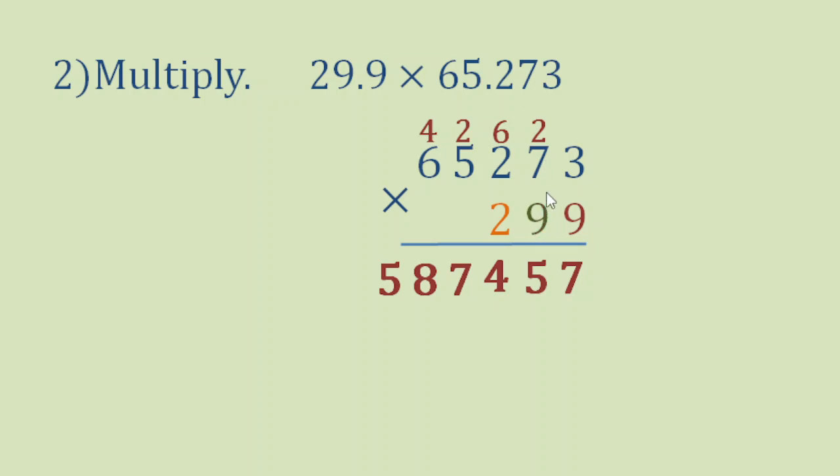Now we will also have to multiply this 9 here to all the digits in our multiplicand. But since we already know the product when we multiply 9 to all the digits here, that's the same product we will get when we multiply this second 9 here to all the digits in our multiplicand. So we will just copy this digits here. But this time, 7 should be lined up with 5 which is on the 10th place because this 9 here is on the 10th place.